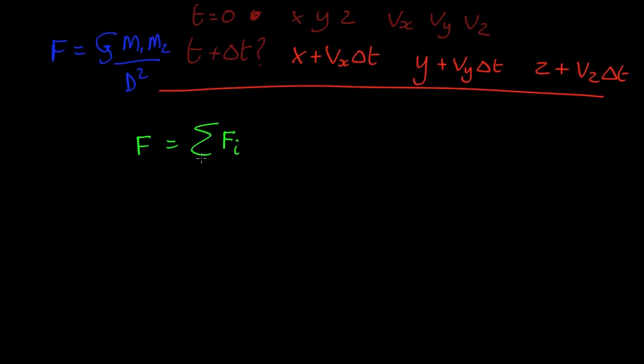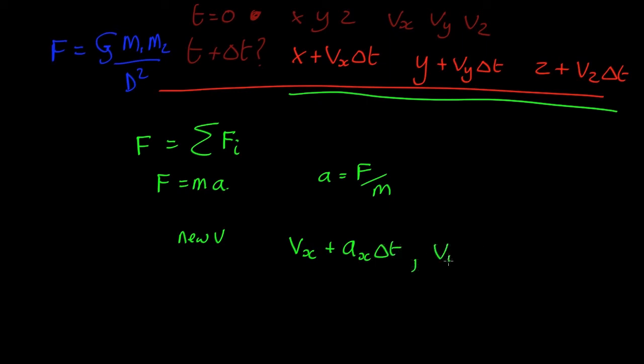Once we've got that, we can then work out the acceleration, because we know that force equals mass times acceleration, so the acceleration is just force over mass. So as we know the acceleration, we already know how to work out the new position, we can also work out the new velocity. The new velocity in x is going to be the old velocity in x plus the x component of the acceleration times delta t, the new velocity in y is going to be the old velocity in y plus the y component of the acceleration times delta t, and so on for z.